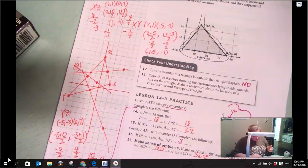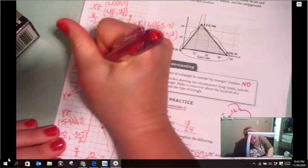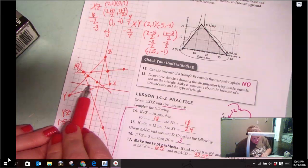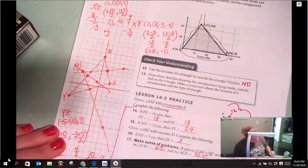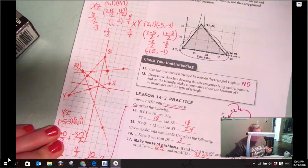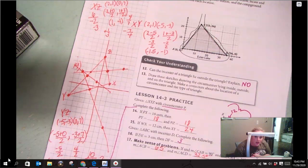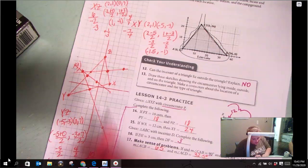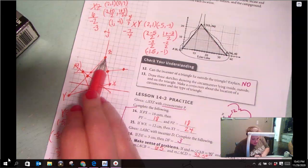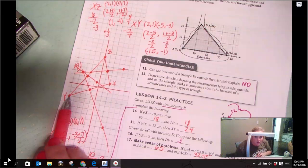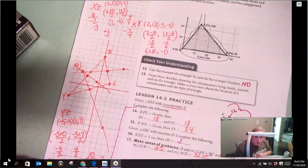So, where is the circumcenter? Right there. It is at negative 3.5 comma 3. That's it. That is going to be equal distance from each of the vertices. So the distance from here to Z is the same as from here to X, from here to Y. That is your circumcenter.